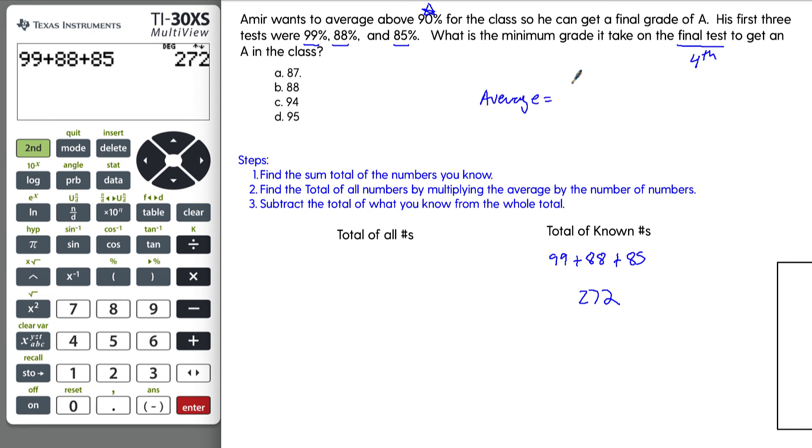The average in this case he wants to have a 90. The number of numbers is going to be four. And so how we figure this out is we multiply these together. Four times 90, let's go ahead and put that in the calculator.